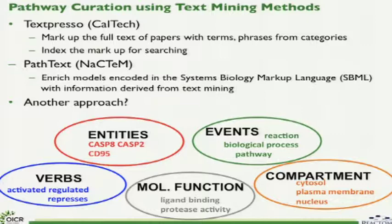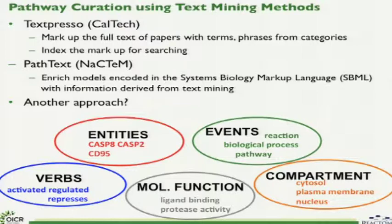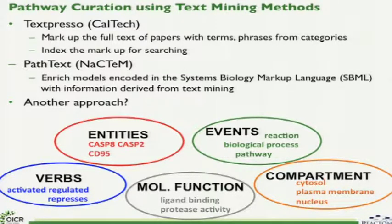What kinds of tools can we use? One that came up was Textpresso — a great way to mark up full-text papers with terms and phrases and index that markup for searching. Another interesting tool is PathText, developed by NaCTeM in Manchester, which enriches models using Systems Biology Markup Language as a kind of training set to provide a framework for text mining. Reactome provides data in this format, so it's easily accessible. Side knowledge mining could also be a great opportunity, and this meeting provides the chance to discuss these things.